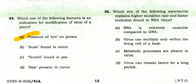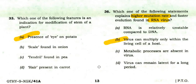Which statement explains higher mutation rate and faster evolution found in RNA viruses? The right option is: the virus can multiply only within the living cell of a host.